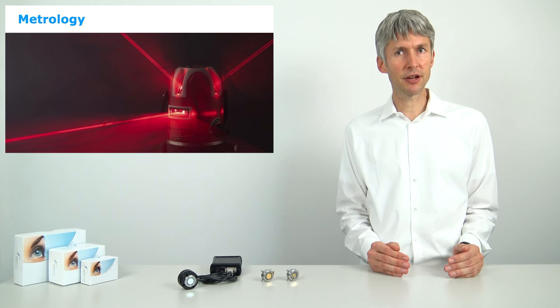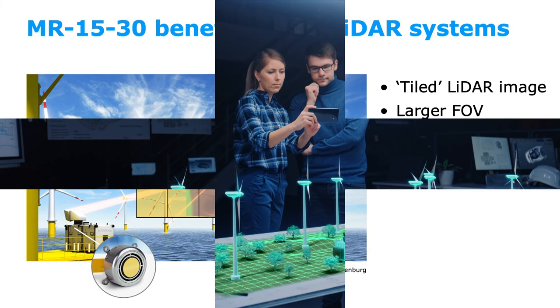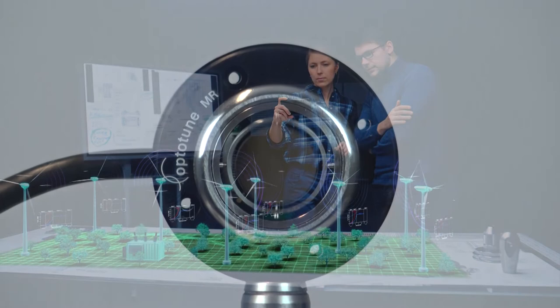The last application area is metrology. Wind LiDAR systems, for example, map the wind speeds at different altitudes by Doppler effect in 3D. Such systems are typically placed on the ground and are used to determine if a certain location will have sufficient wind to establish a profitable wind park.